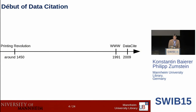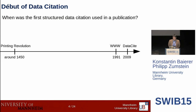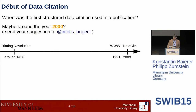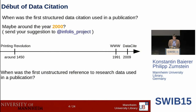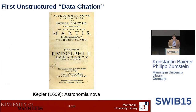Let's start with when data citation actually starts. I have here a timeline. The first question: when was the first structured data citation used in a publication? I claim maybe around the year 2000. If you have any proof or more hints, just send it to us — we're interested in finding a more accurate date. Next question: when was the first unstructured reference to research data used in a publication? And here we say that's 1609 or before. The proof just follows.